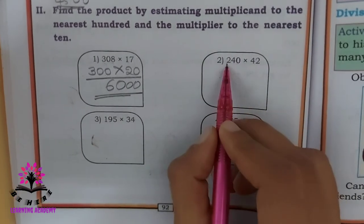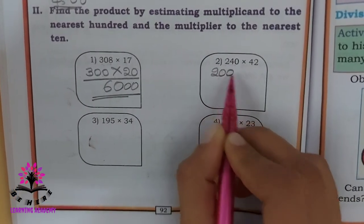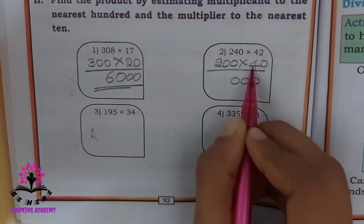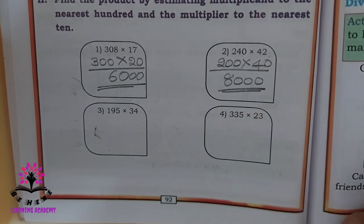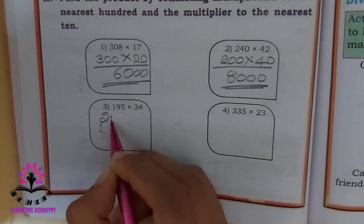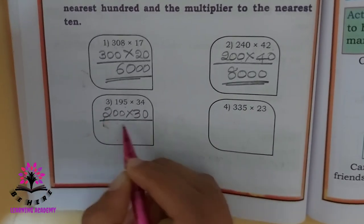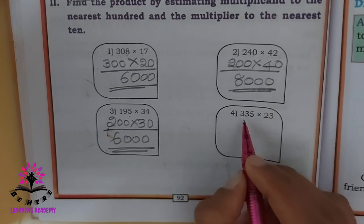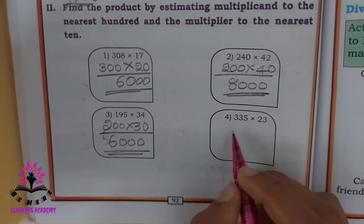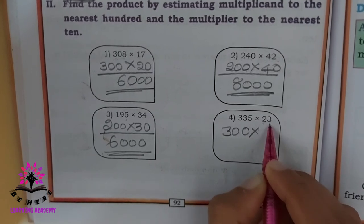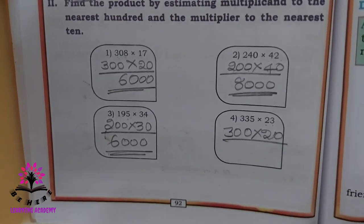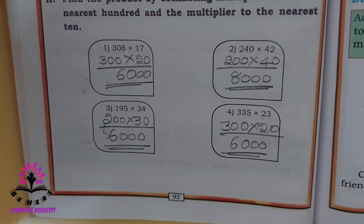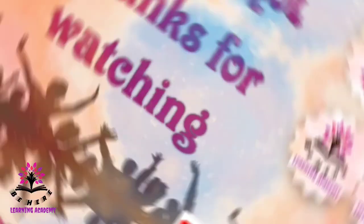For 240, the nearest 100 value is 200. For 42, the nearest 10 value is 40. There are three zeros, and 4 times 2 is 8, so the answer is 8000. For 195, the nearest value is 200, and 34 rounds to 30. Three zeros, 2 times 3 is 6, so 6000. For 135, the nearest 100 value is 300, and 23 rounds to 20. Three zeros, 3 times 2 is 6, so the answer is 6000.